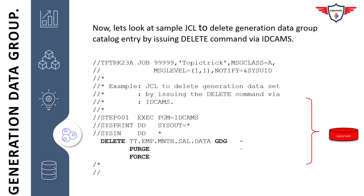An important point to highlight here is that if you have used these two parameters — PURGE and FORCE — then the system will delete the GDG base and its data sets even if the expiration date hasn't been reached. This could be an interview question: how can you delete your GDG base and generation data sets even if the expiration date has not been reached? The simple answer is to use the DELETE GDG command along with the PURGE and FORCE parameters.